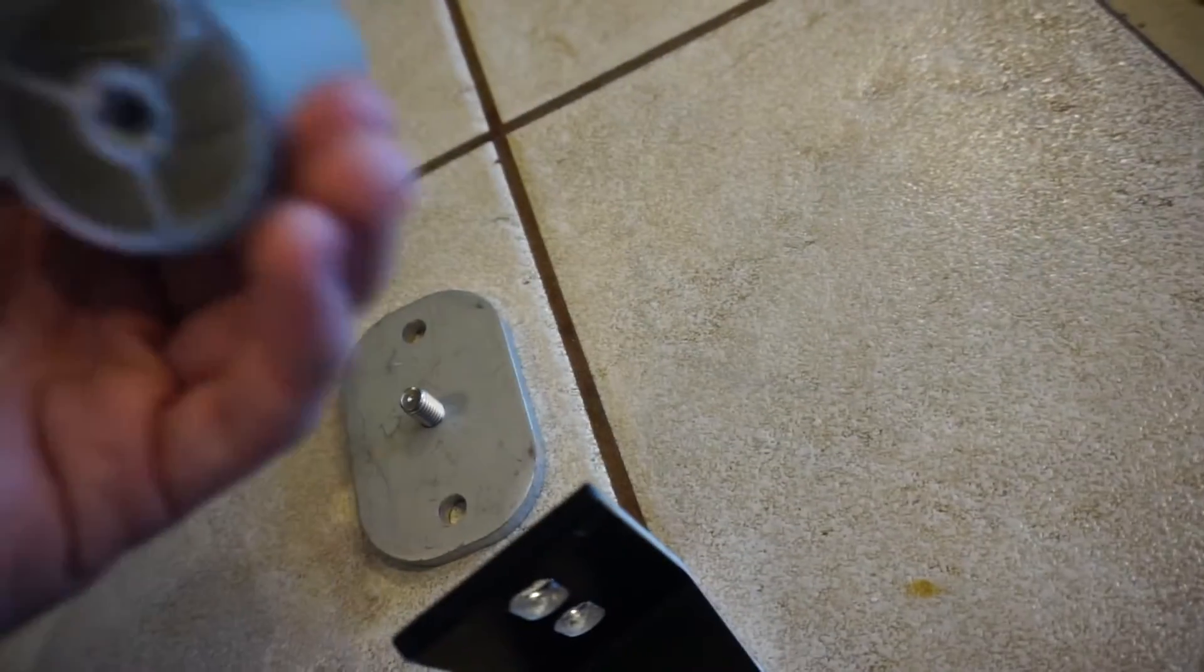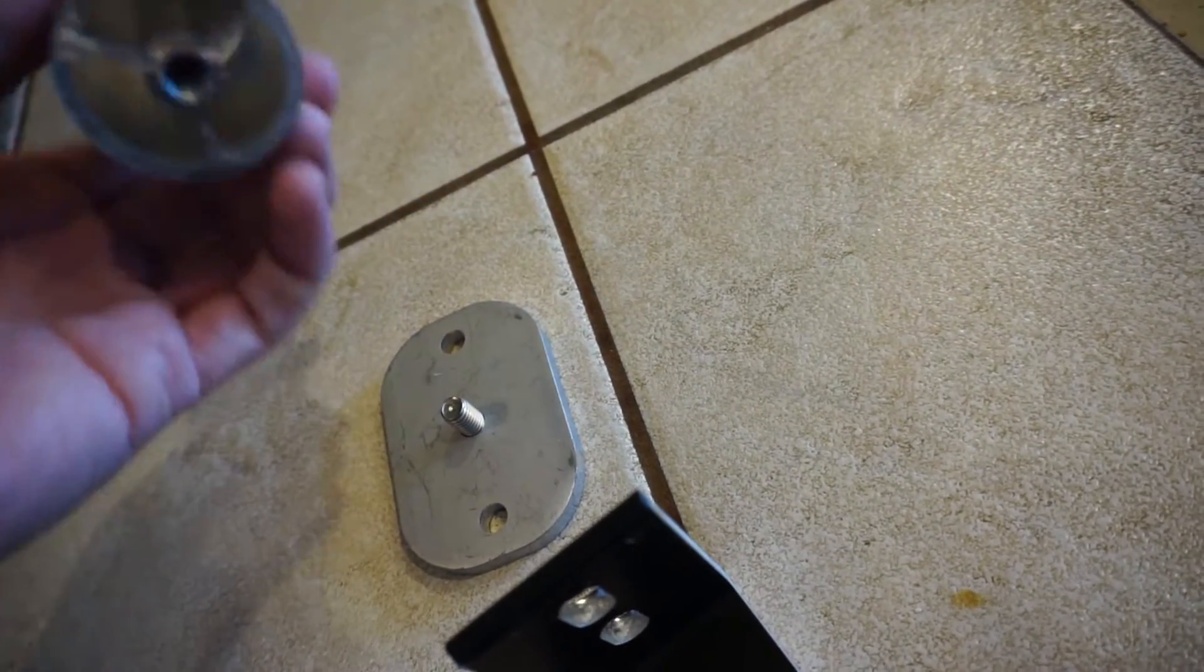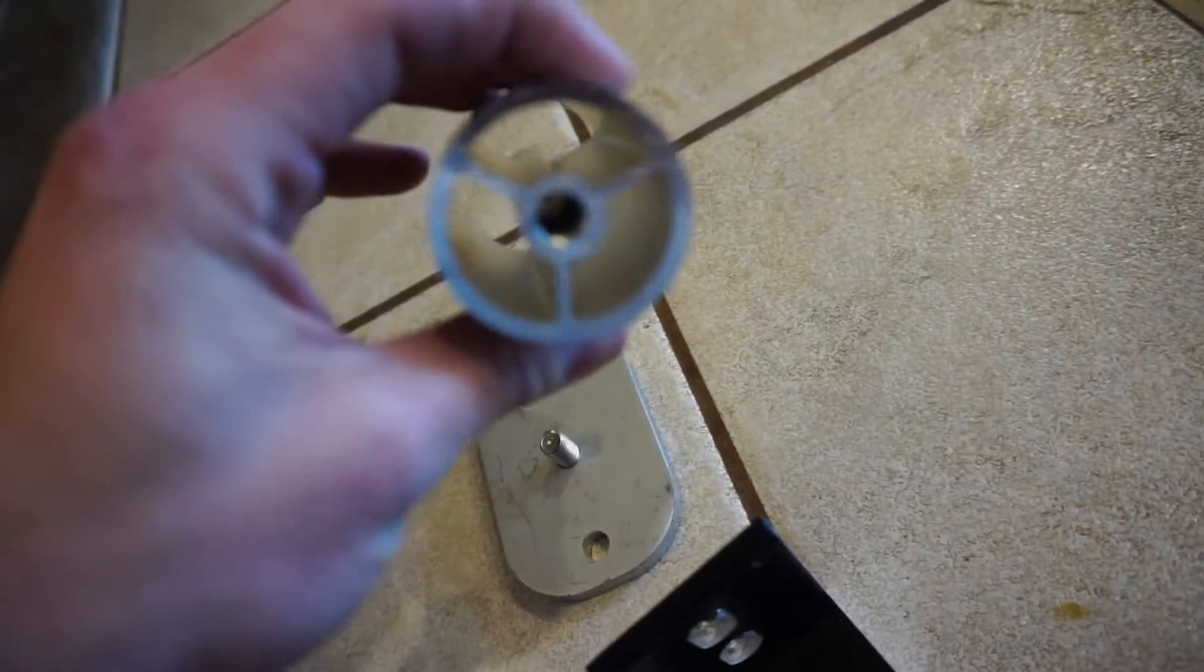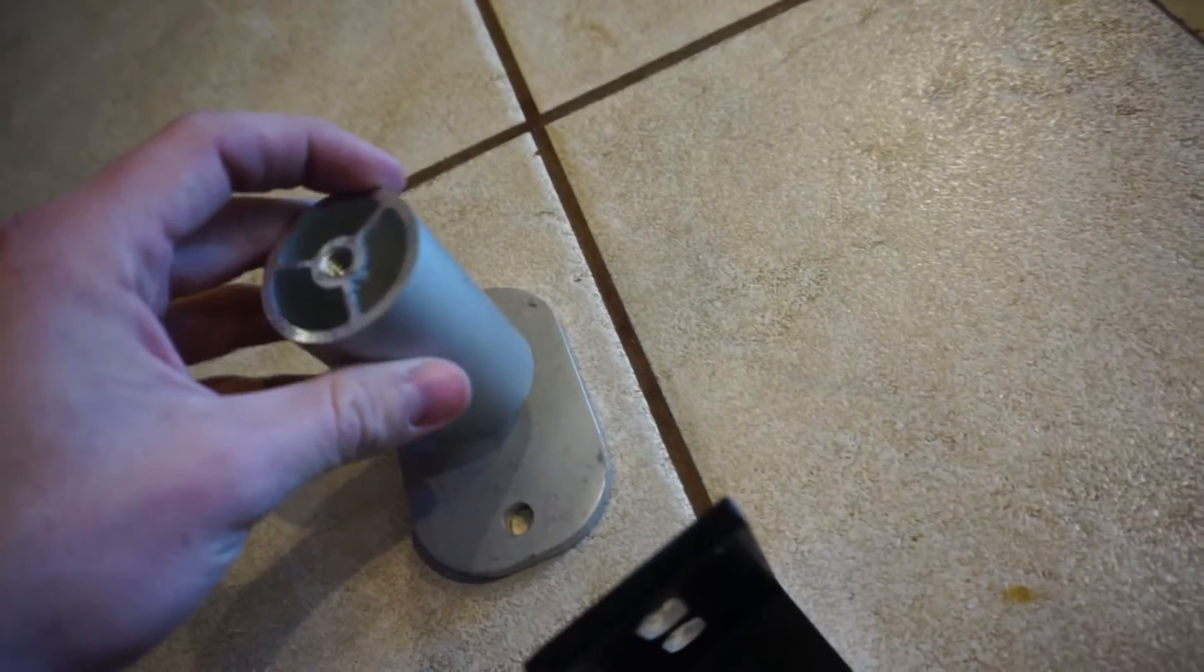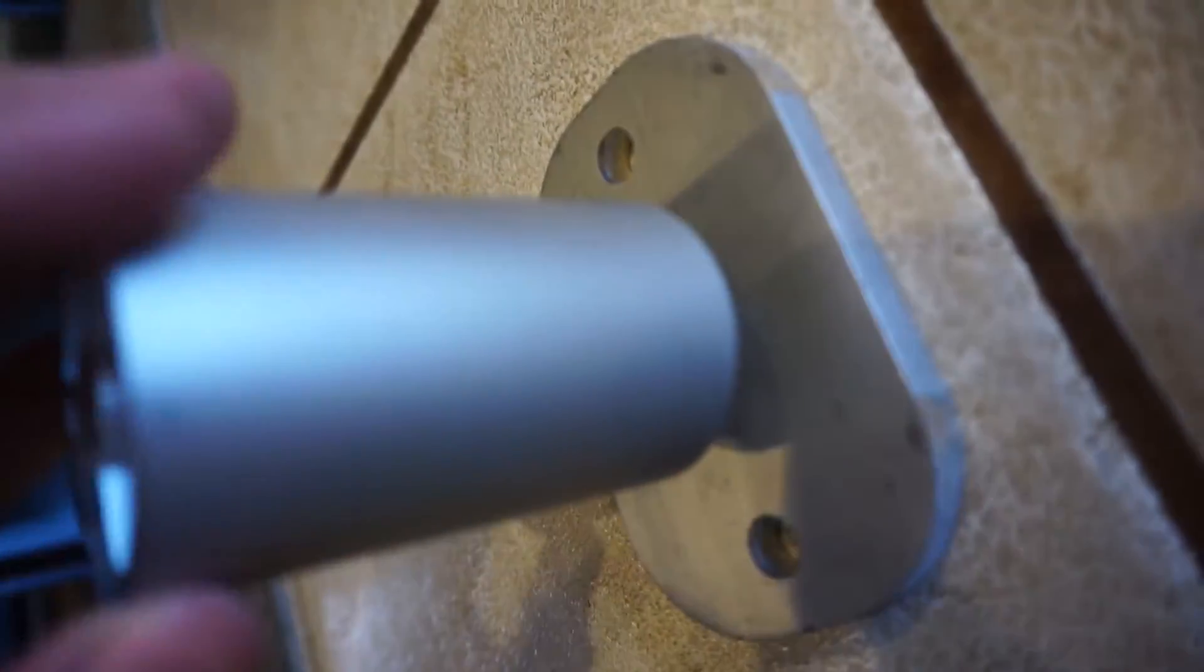So basically the way this works is you have this extruded aluminum pipe that's threaded in the middle and then this just gets inserted and threaded. Just rotate and that's basically how it goes together.